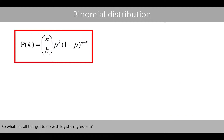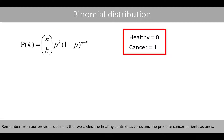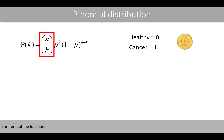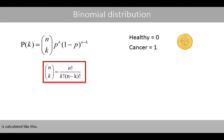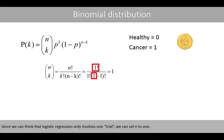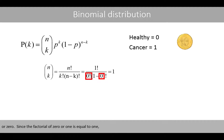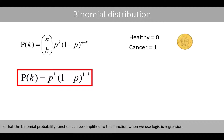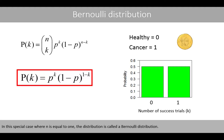So what does this have to do with logistic regression? Remember that healthy controls are coded as zeros and prostate cancer patients as ones. We can think of each data point as one trial. Since logistic regression involves only one trial, we set n to 1. When n equals 1, k can be either 1 or 0, and the factorial term equals 1, so we can eliminate it. The binomial probability function simplifies accordingly. In this special case where n equals 1, the distribution is called the Bernoulli distribution.